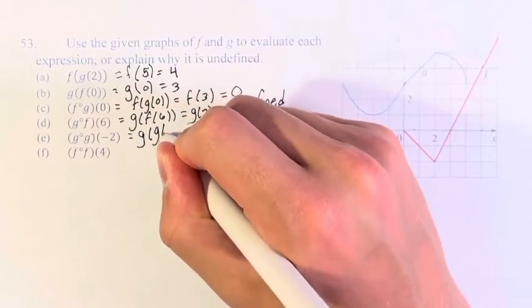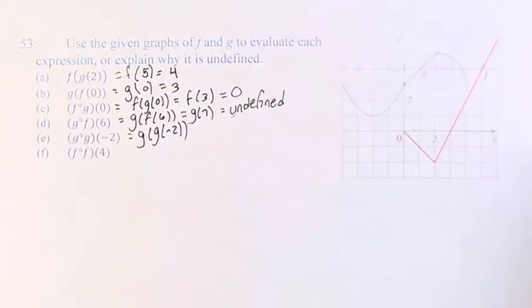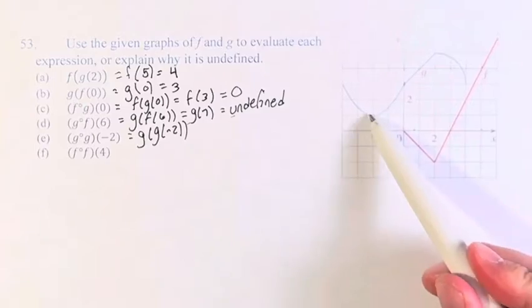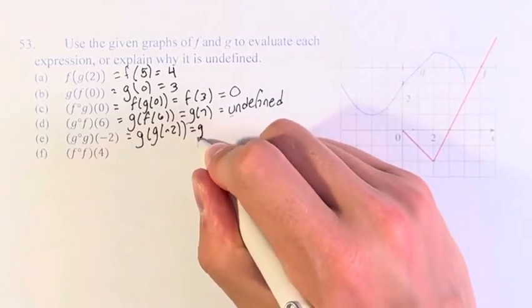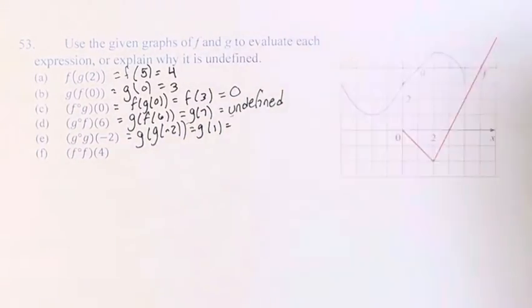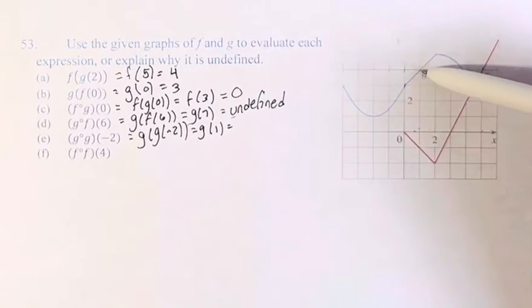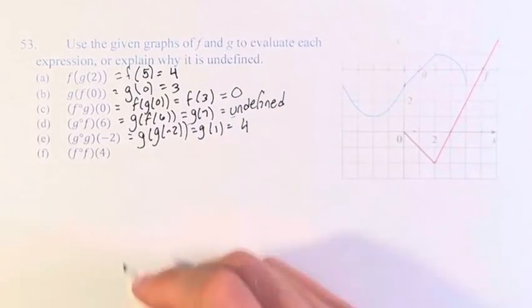Next we have g of g of negative 2. At x equals negative 2, g has a value of 1. So this becomes g of 1. What is g of 1? At x equals 1, g is equal to 4. So g of g of negative 2 equals 4.